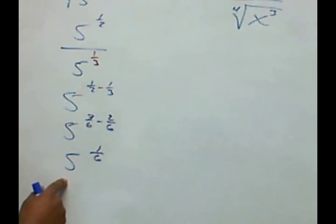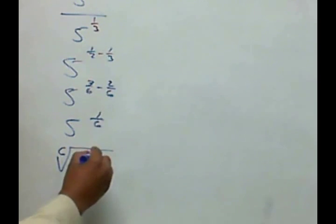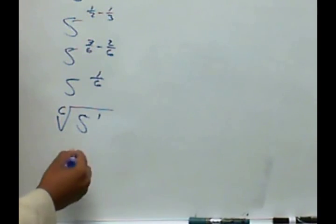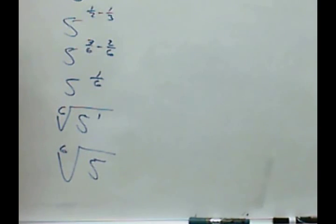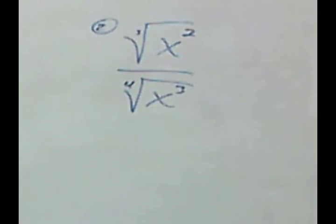Converting this back into a radical, the 6 will be the root. So this would be the 6th root of 5 to the 1st. And 5 to the 1st is just 5.